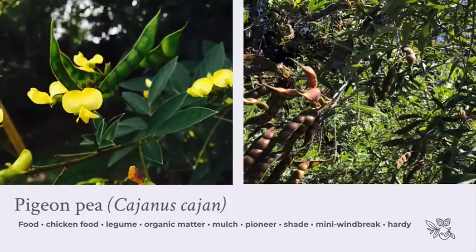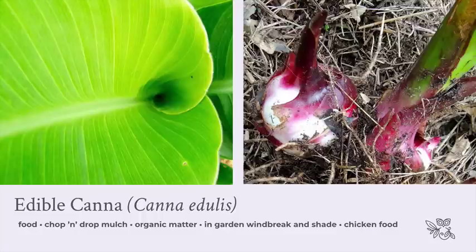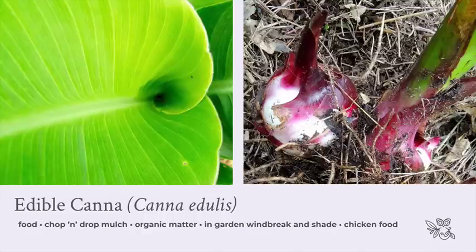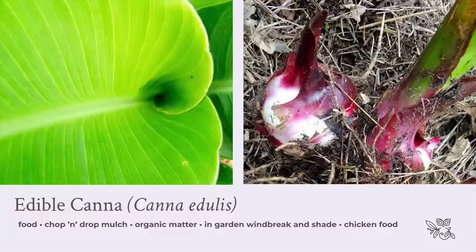Edible canna — Canna edulis — is another plant I don't know what I would do without. There are many sorts of canna in the world but most aren't edible. You can tell the edible kind because it has a purply-red color at the base of the stalk, and close to the soil you can see swollen corms — the swollen rhizome is what you eat. It's my potato alternative, and what I love is that I don't need to pull up the plant or dig around fossicking for potatoes. I take a knife, look for a shoot just about to sprout in the mulch, and gently slice it off.